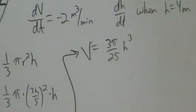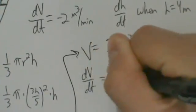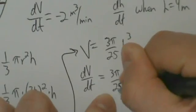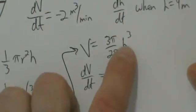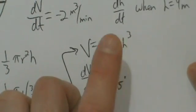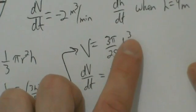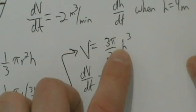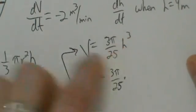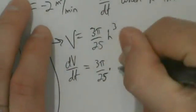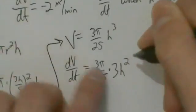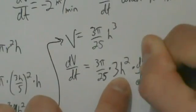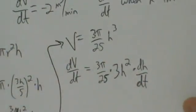Now we're ready to take a derivative. V equals 3π/25 times H cubed. Taking the derivative of both sides implicitly with respect to T: dV/dt equals 3π/25 — it's just a constant multiple, so it stays — times the derivative of H cubed by chain rule. Since H is a function of T, we get 3H squared times dH/dt. So dV/dt equals 3π/25 times 3H² times dH/dt.